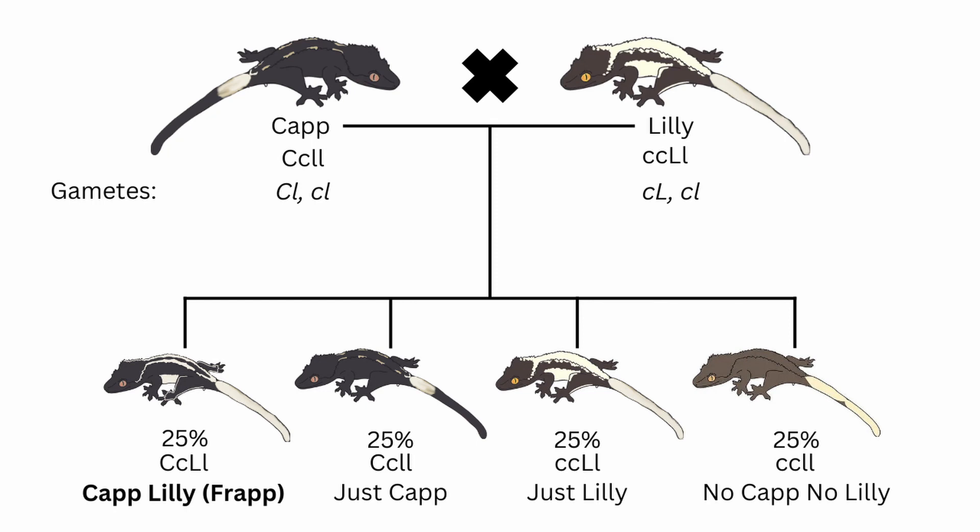However, there is one other ethical way of making frappuccino crested geckos that has the exact same percentage split of 25-25-25-25: frappuccino, cappuccino, lily-white, and no cap no lily. I'm going to do a final summary at the end so that you can see what is the best option for you.